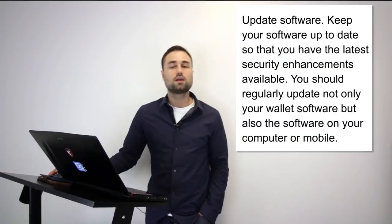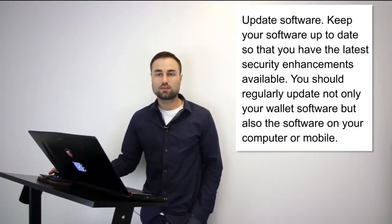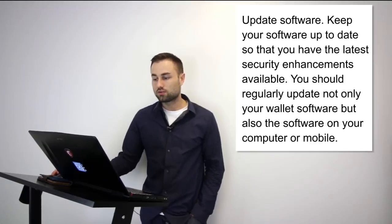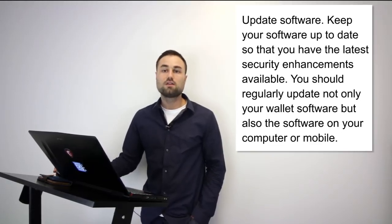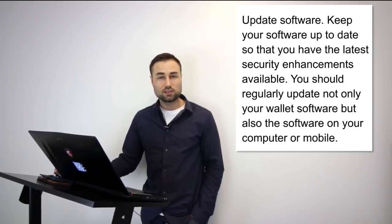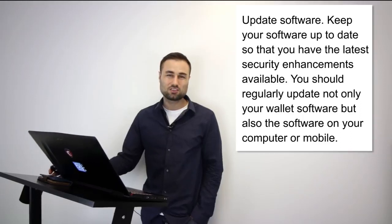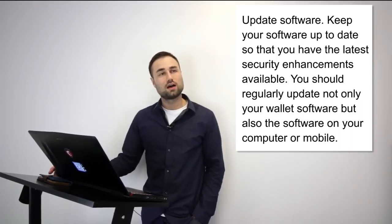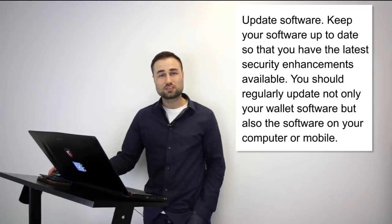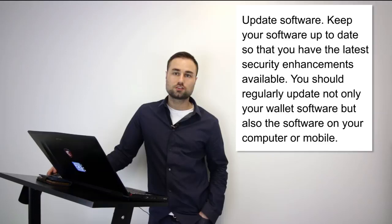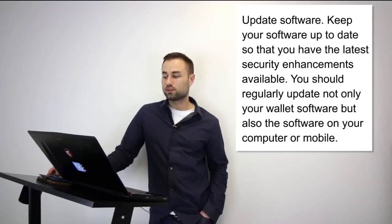Number two: keep your software updated — like any good software, whether on mobile or desktop, make sure it's up to date. Finally, add extra security. There are extra security options such as two-factor verification. If you're using online wallets, make sure it's Google Authenticator as opposed to text message, because people can easily clone your phone. Google Auth is the best safety feature when it comes to two-step verification.